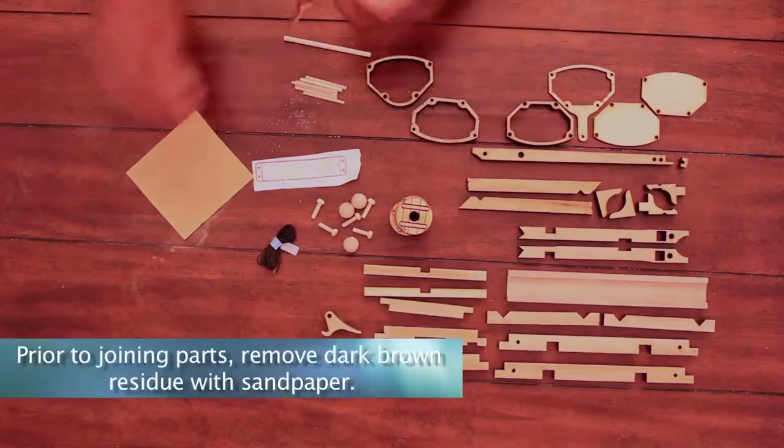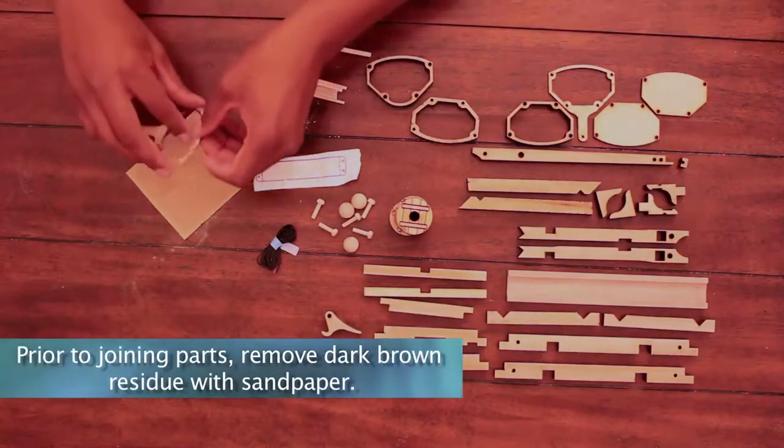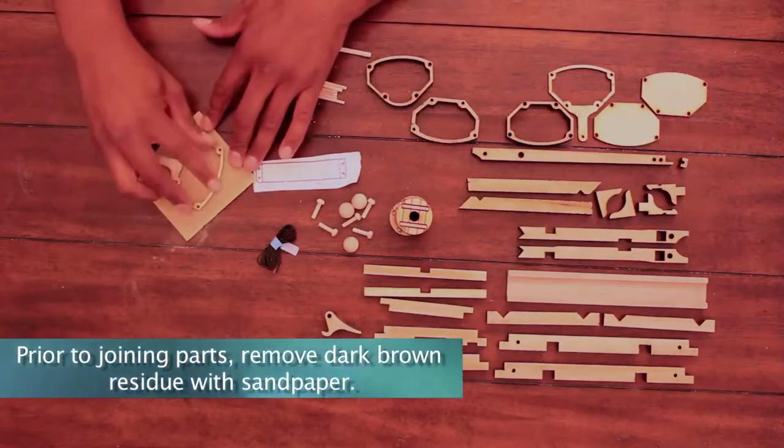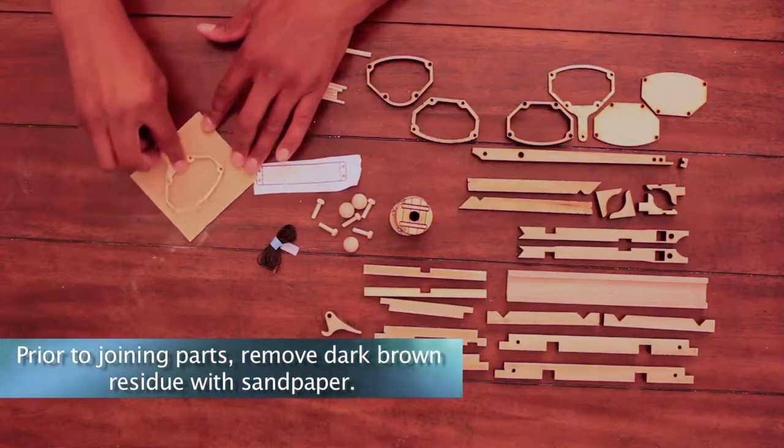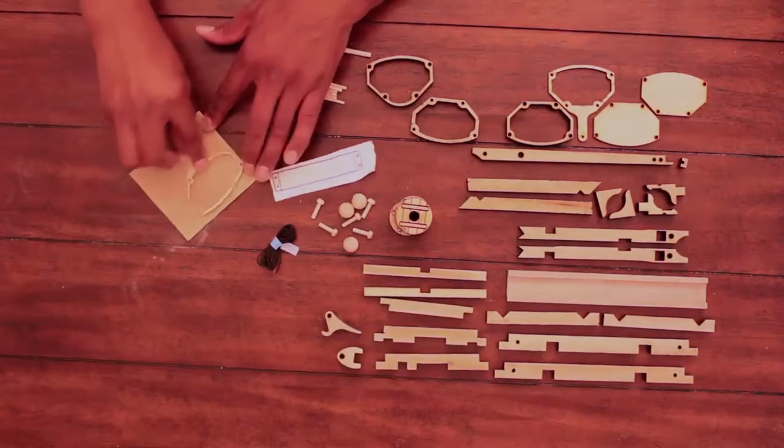Prior to joining parts together, use 150 grit sandpaper to remove the dark brown residue from any area requiring glue. This will ensure a secure bond.